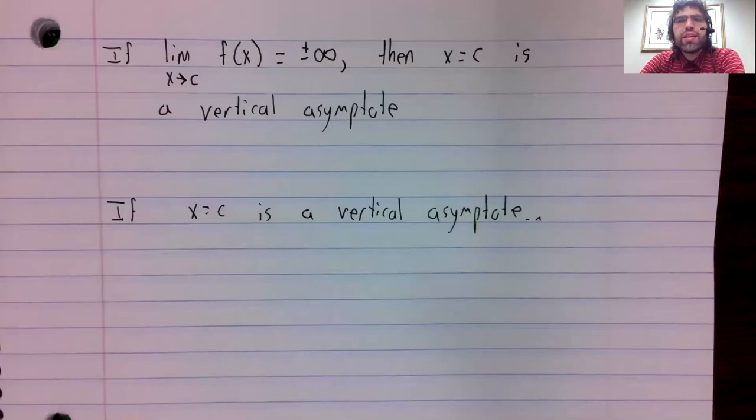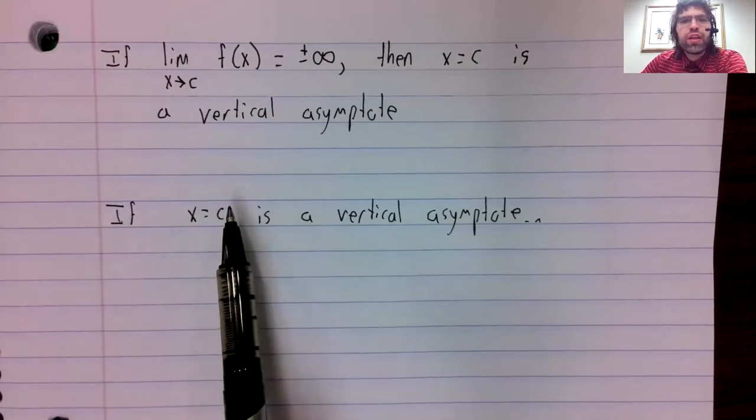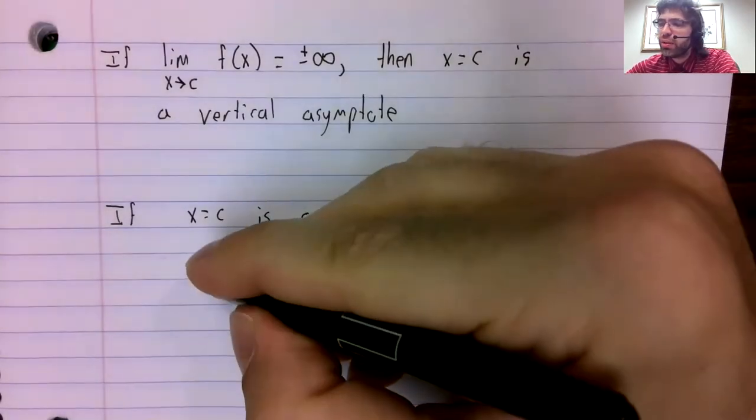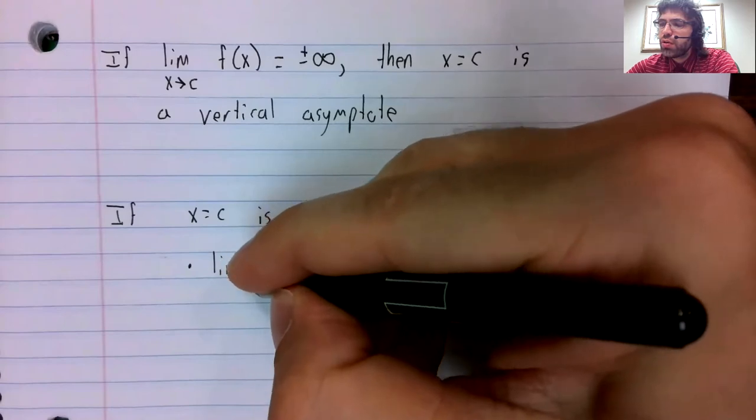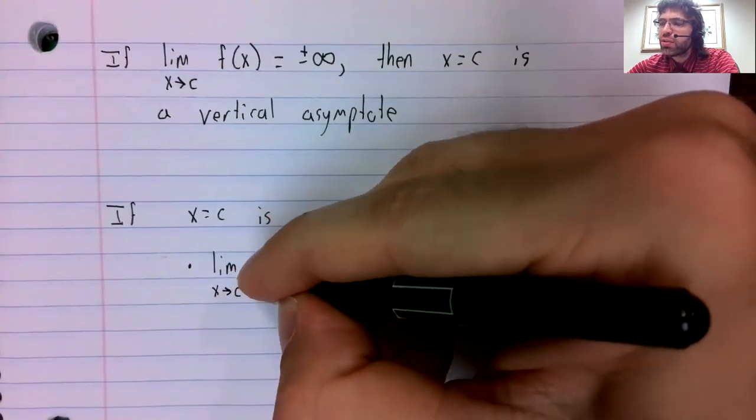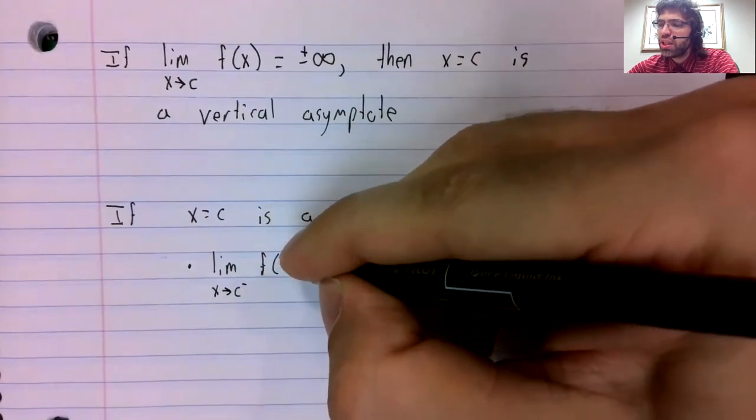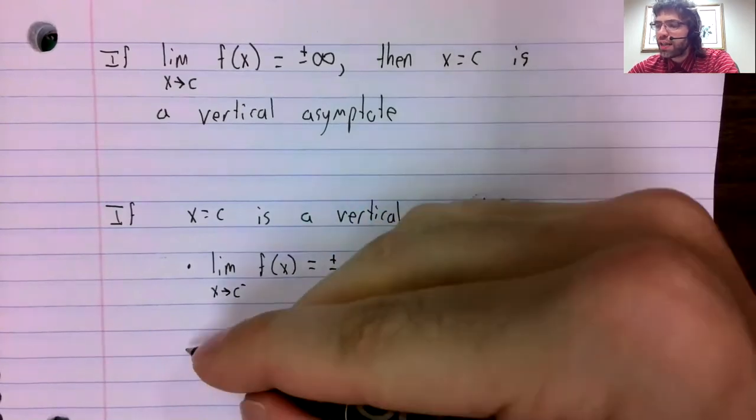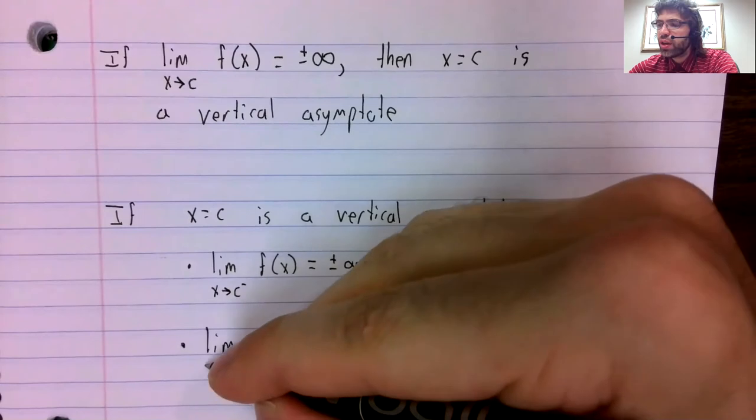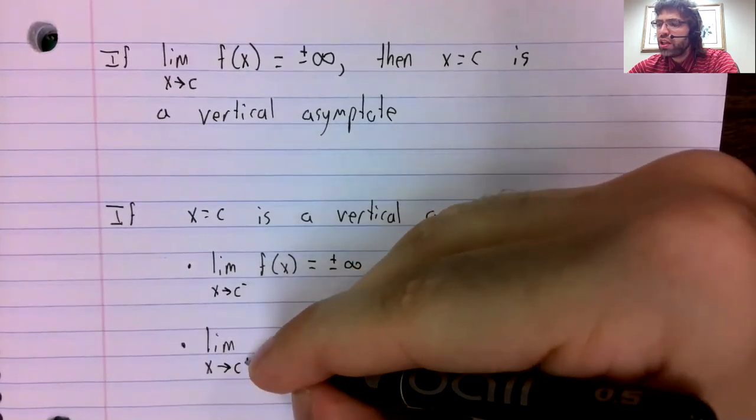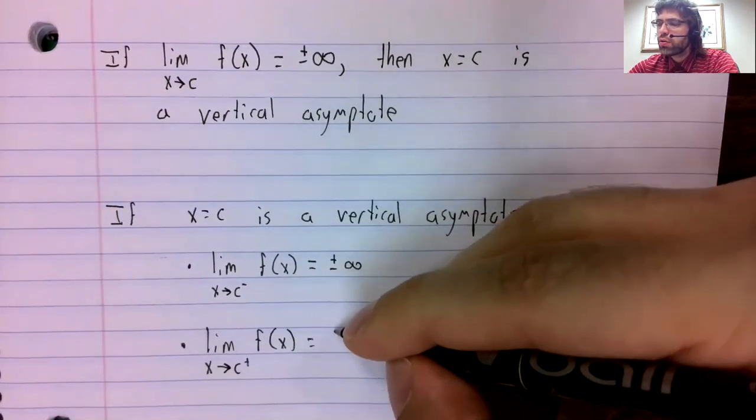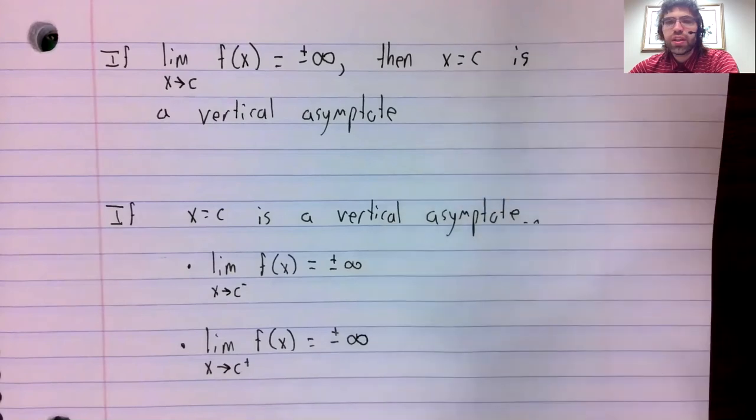We have a pseudo converse to this. If we have a vertical asymptote, it doesn't mean we have an infinite limit. What having a vertical asymptote does mean is that the one-sided limits are either infinity or negative infinity.